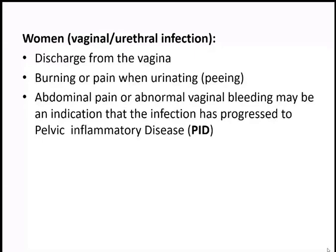In urethritis, a common symptom is discharge from the urethra. Some patients present with vaginal discharge, either because the infection has spread to the endometrium or cervix, or due to confusion about the discharge source. Patients with PID will present with lower back pain, abnormal vaginal discharge, and intermenstrual bleeding.